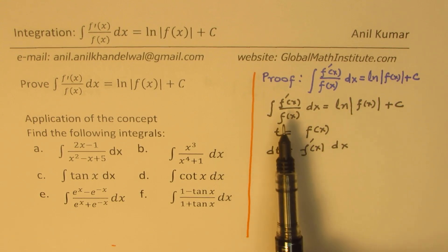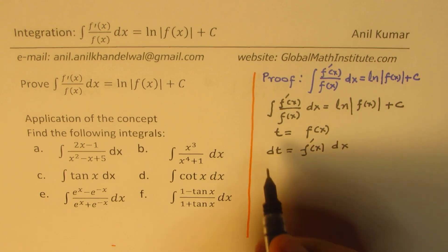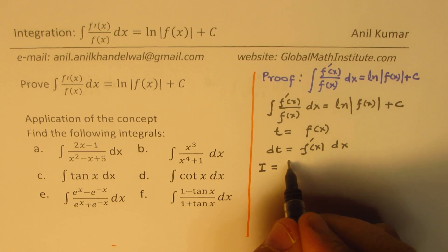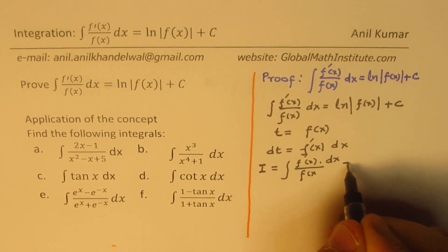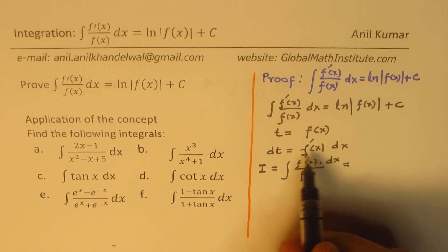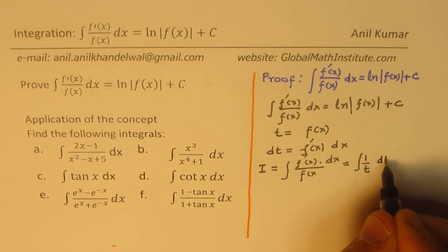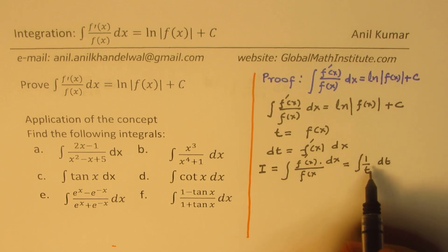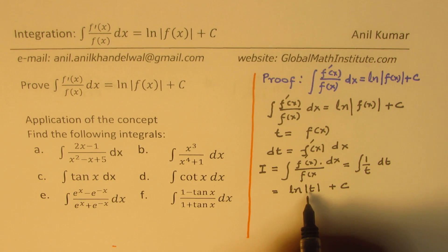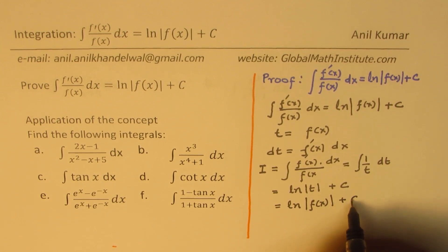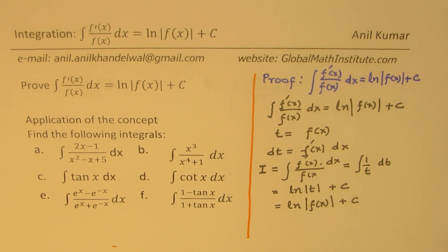We can now rewrite our integral in terms of t. The integral of f'(x) dx over f(x) can be written as 1 over t dt, since f'(x) dx is dt and f(x) is t. The integral of 1 over t is ln|t|, so this integral is ln of the absolute value of t plus c. Substituting back f(x) for t, we get ln of the absolute value of f(x) plus c. So if the numerator is the derivative of the denominator, we can straight away write down the answer.